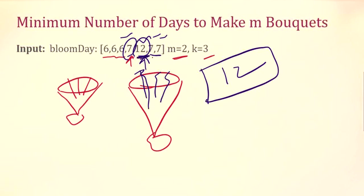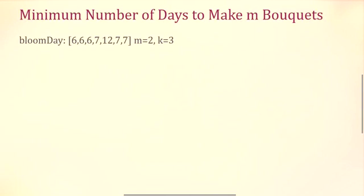So how are we going to approach this? The minimum days we have to wait to get a flower is the minimum value in the array, which is 6 in this example. We clearly know the output — the number of days we need to wait — is going to be between the range 6 to 12. If we can figure out that our output exists between some lower bound and upper bound, we can directly go for binary search.